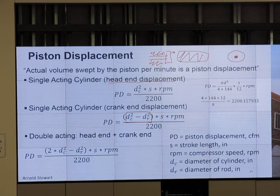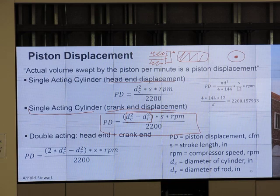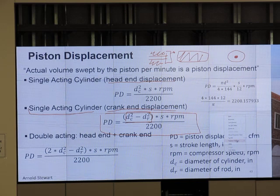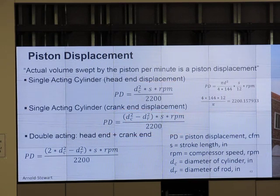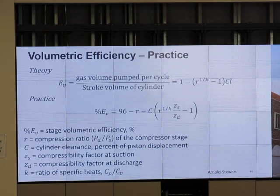For single acting cylinder on the crank end displacement, I use this equation. It's just cross sectional area multiplied by the length that it moves. This tells me piston displacement or actual volume swept by the piston. Then I have double acting. Double acting is I add those two equations together. That is for double acting.